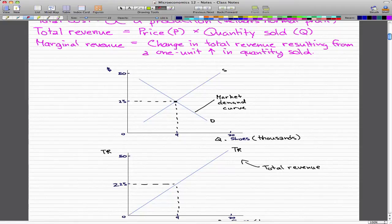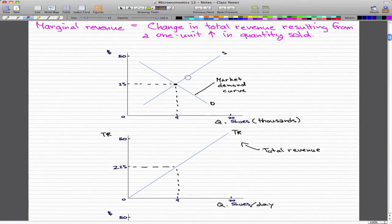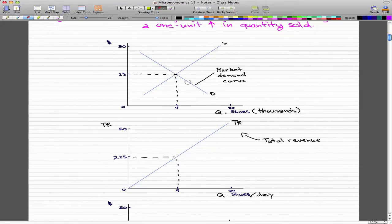We have some graphs to look at. This first graph illustrates a firm's revenue concepts. It shows the market demand and market supply that determine the market price the firm must take. We have a supply curve and a demand curve. The point at which they intersect gives us the market price. This market price is the price that the firm must take. For this firm selling shoes, at 9,000 shoes, the price they're selling these shoes at is $25 each.